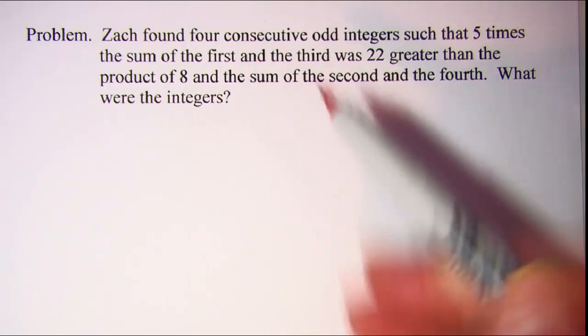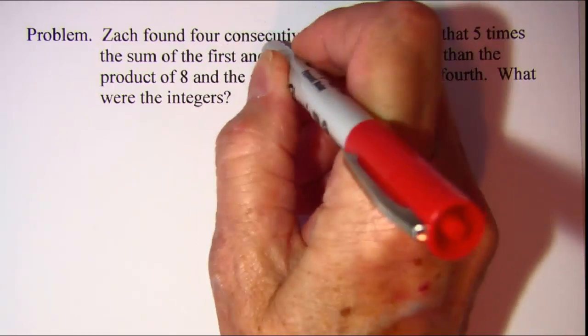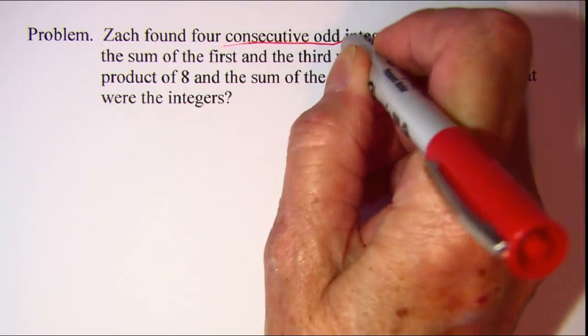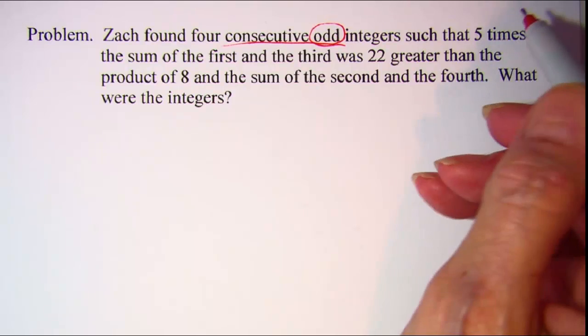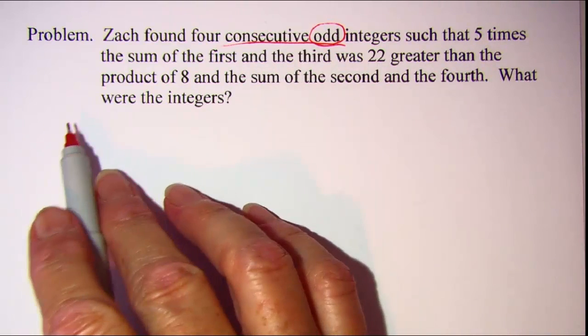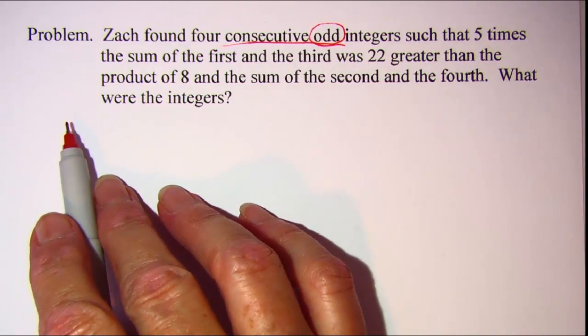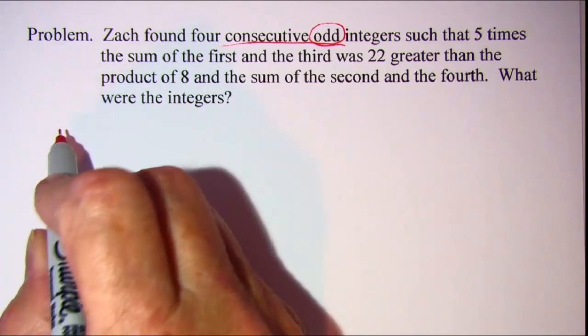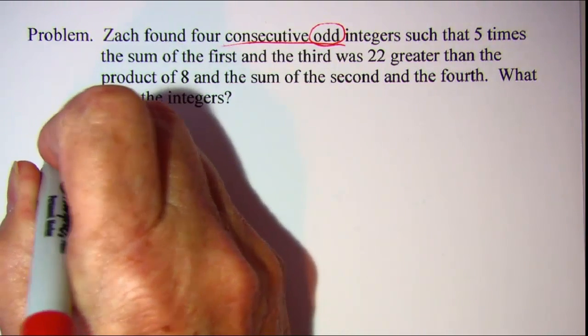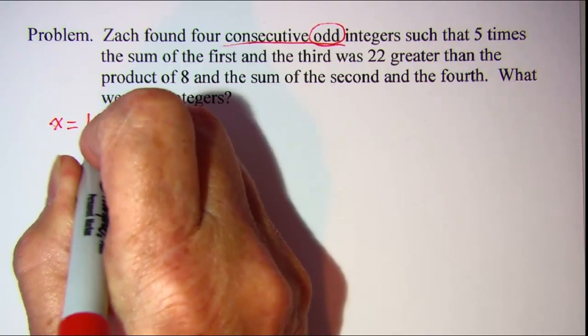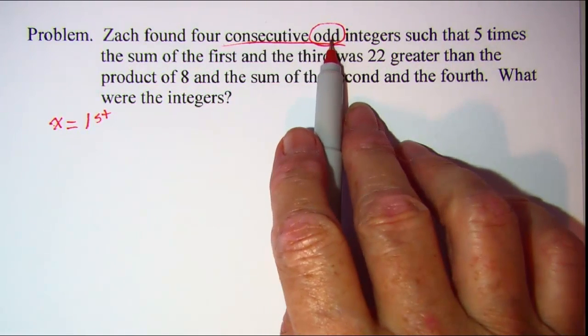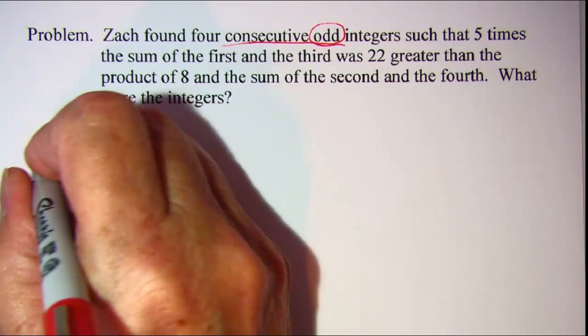The first thing that we notice is that we need consecutive odd integers. So let's set up our expressions that we're going to use when we translate. X is going to always equal the first and since we're talking about odd integers I need to add 2.